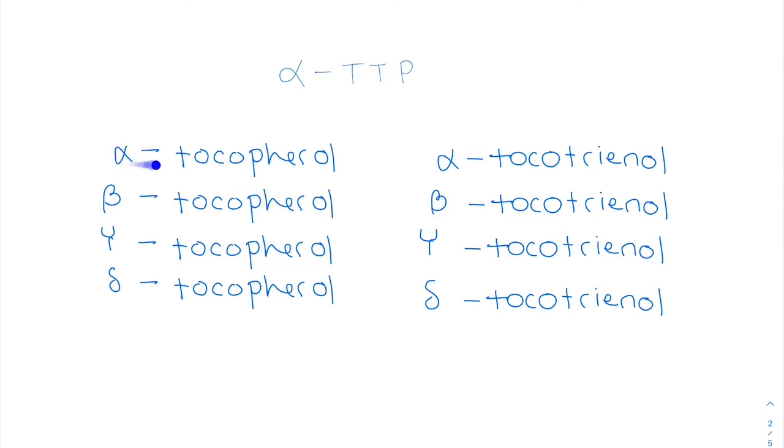So now focusing on this alpha-tocopherol, why is that one the predominantly bioactive vitamin? So there are two reasons. The first is because this alpha-TTP is specific for alpha-tocopherol. So it's able to put this one specifically into the VLDL in our body, so then this alpha-tocopherol is enriched through the alpha-TTP.